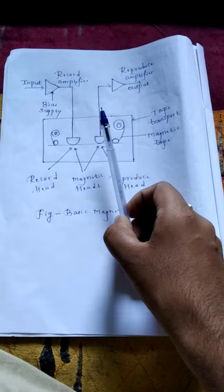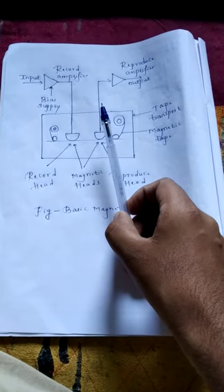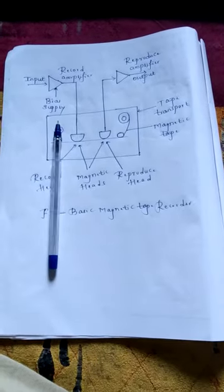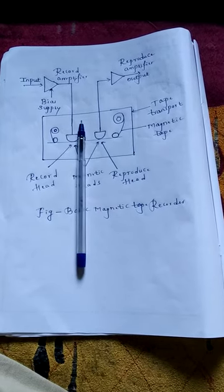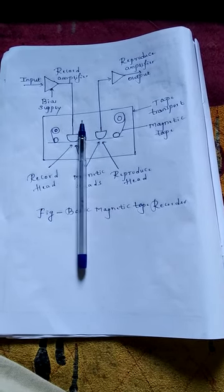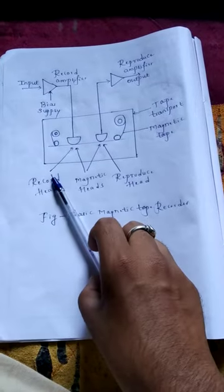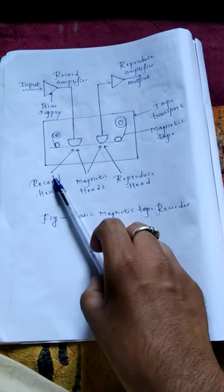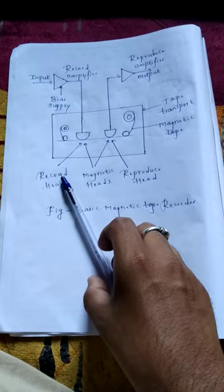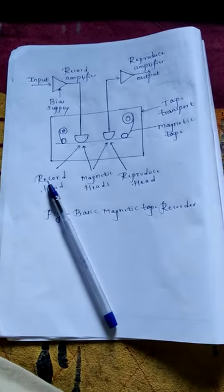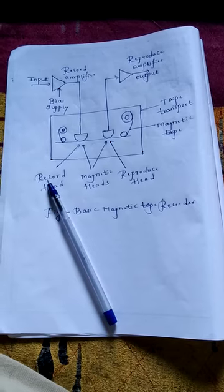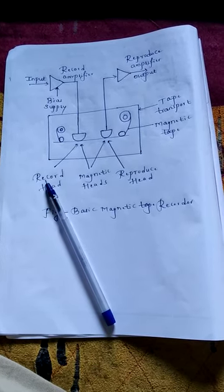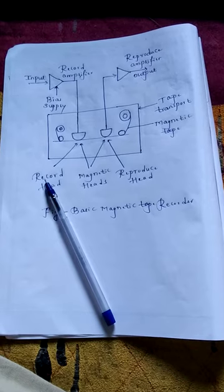So next we will move on to the working principle of magnetic tape recorder. In the first point, when a magnetic tape is passed through a recording head, any signal recorded on the tape appears as a magnetic pattern dispersed in the space along the tape, similar to the original coil current variation with time.